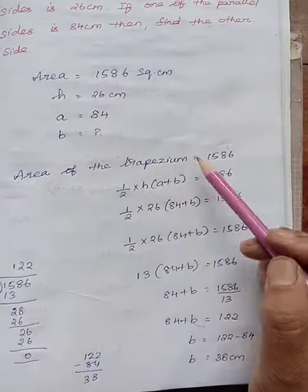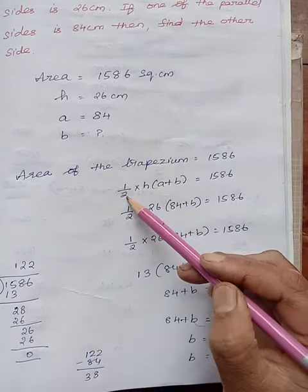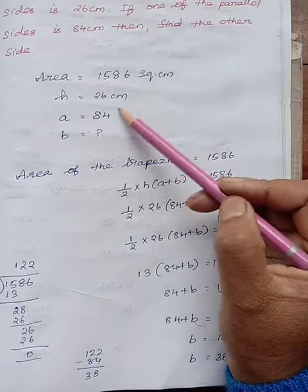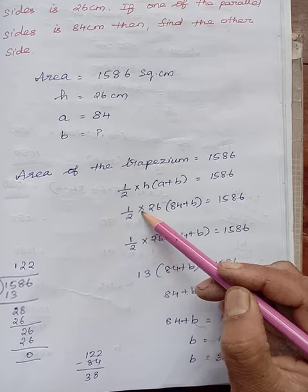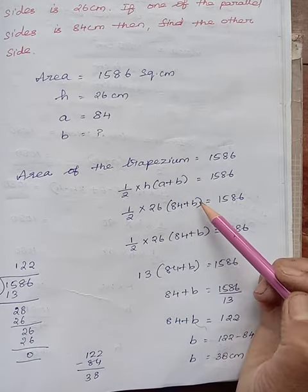So area of a trapezium is given as 1586, but we know that area of a trapezium is 1/2 × h × (a+b) equal to 1586. Let us substitute all these values in the formula. Half into h value is 26, a value is 84 plus b value we need to find.